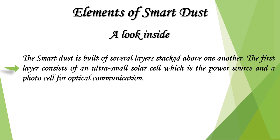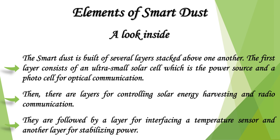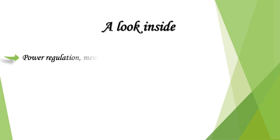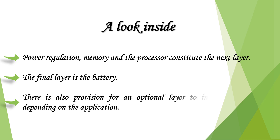Smart dust is built of several layers stacked above one another. The first layer consists of an ultra-small solar cell, which is the power source, and a photo cell for optical communication. Then there are layers for controlling solar energy harvesting and radio communication, followed by a layer for interfacing a temperature sensor and another layer for stabilizing power. Power regulation, memory, and the processor constitute the next layer. The final layer is the battery, with an optional additional layer to include other sensors depending on the application.